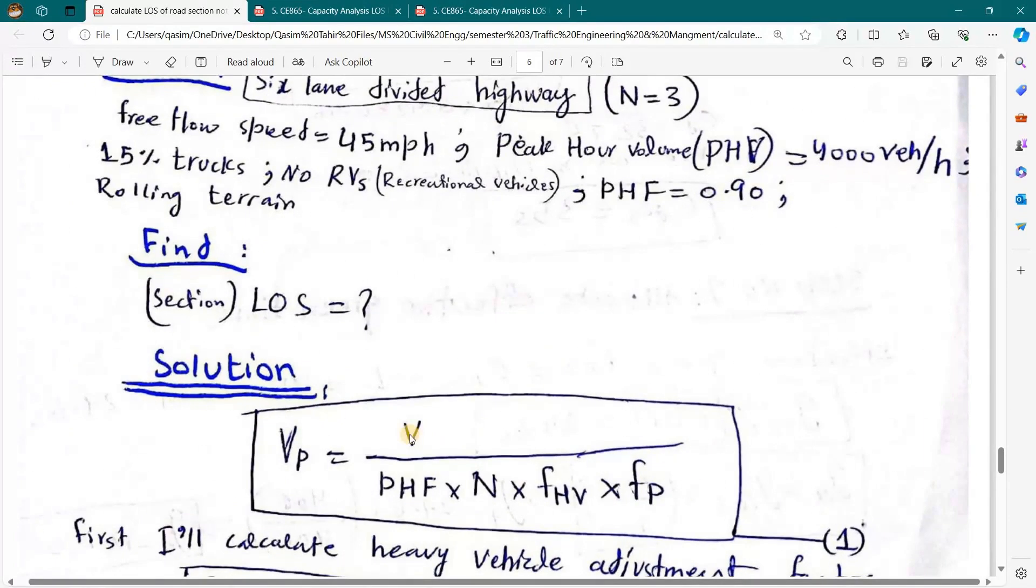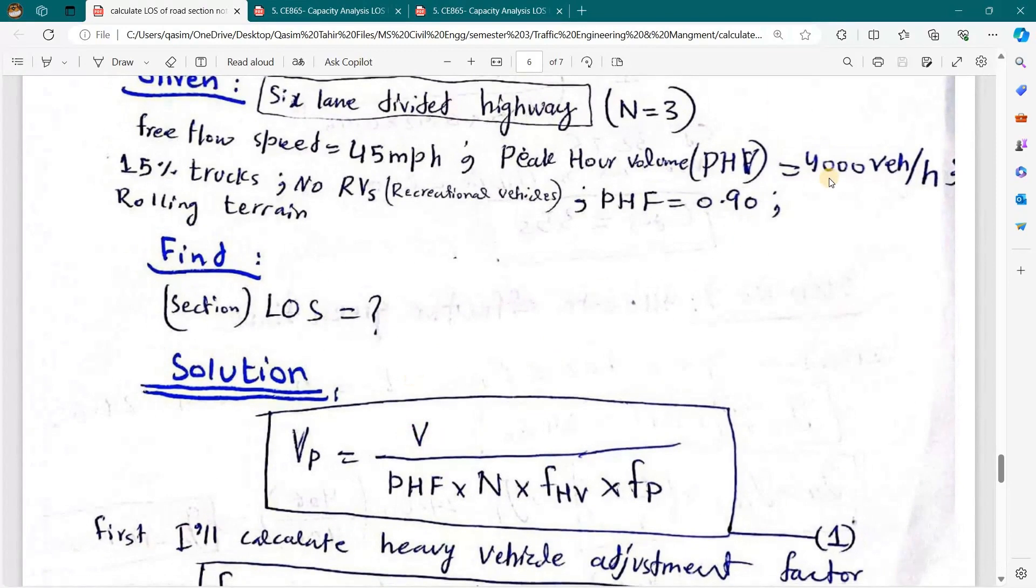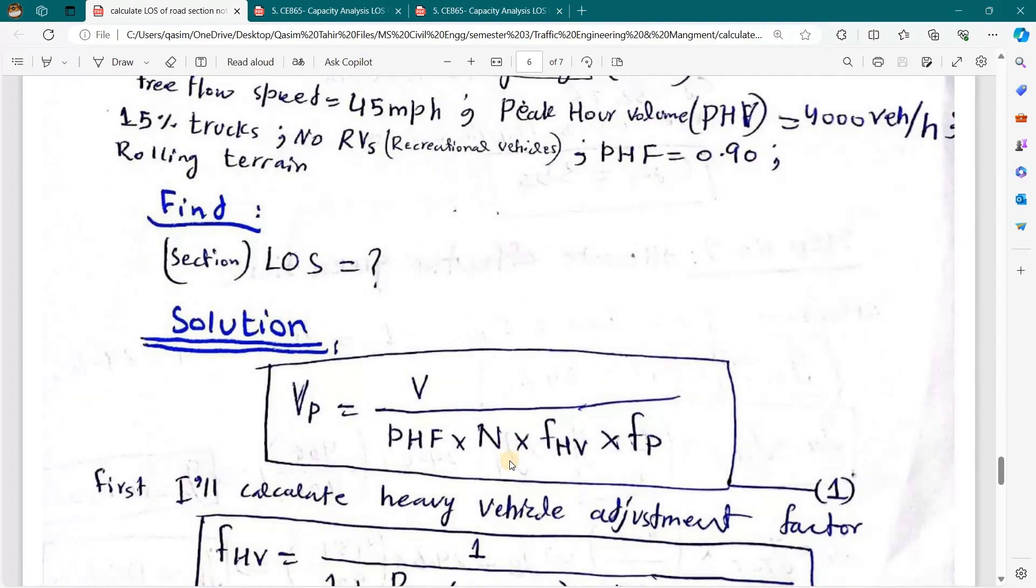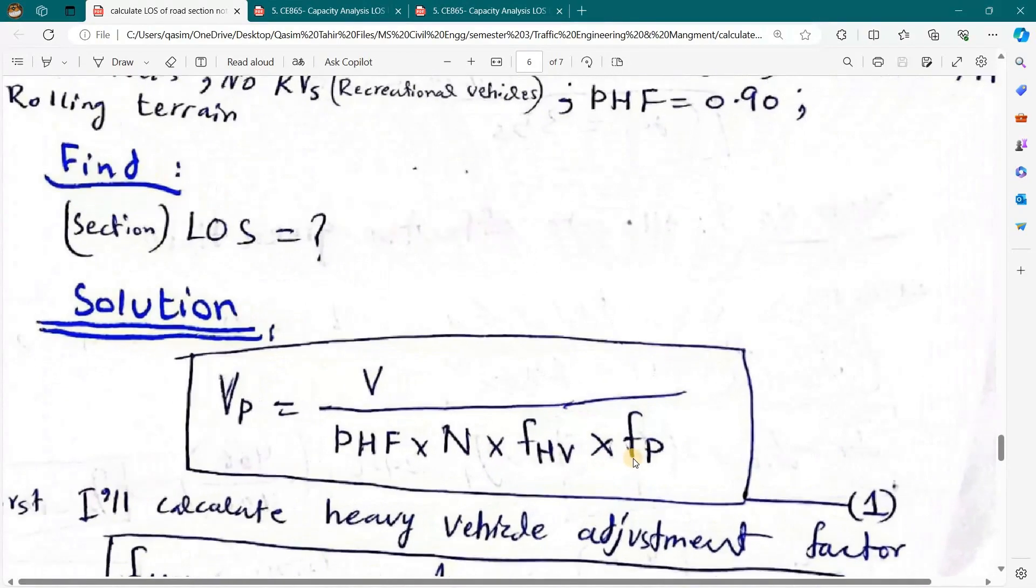Here we have volume which is given as 4,000 and peak hour factor is also given as 0.90, and number of lanes on one side of the road is also given. fp is a familiarity factor